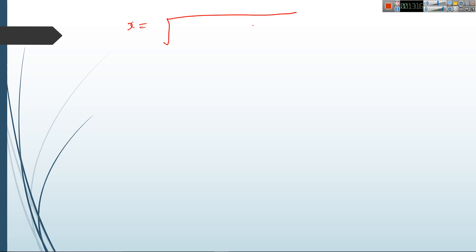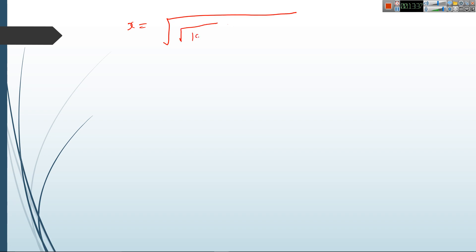Now we will see a question that was asked in the SBI PO exam. X is equal to the square root of 1024 plus the square root of 7921, multiplied by 48.5. We have to find the value of X. First, please learn and remember all squares from 1 to 30 and all cubes from 1 to 25, because if you don't remember squares and cubes, it will take a lot of time to solve this type of question.